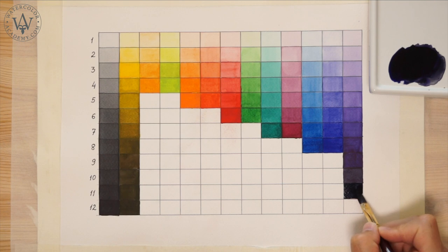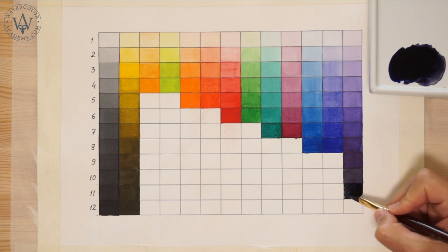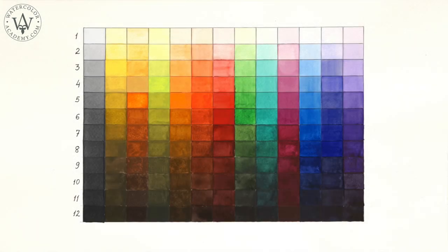Diluting paints makes them pale and dim, and adding darker pigments to achieve shades changes their color and makes them dull.